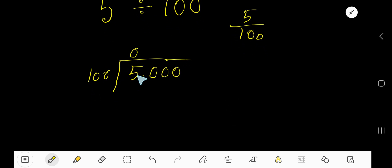Then 0 times 100 means 0. If you subtract, then you will get 5. Then we have decimal. Decimal will go directly to the quotient. Then we have here a 0.